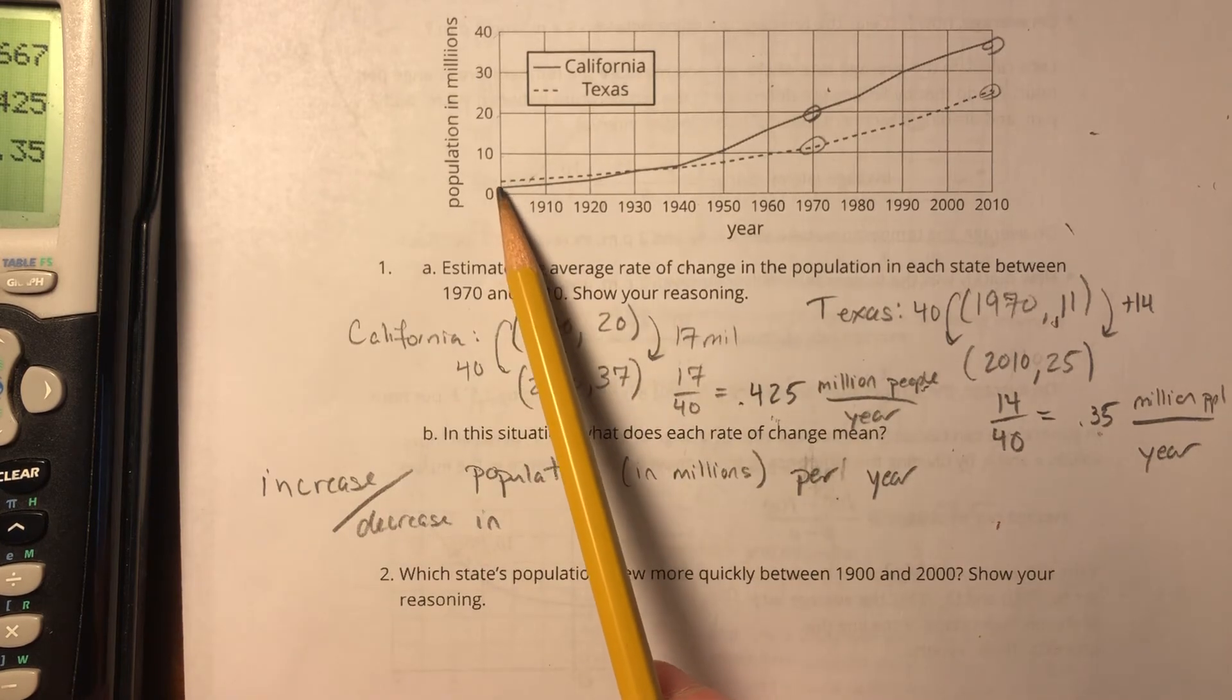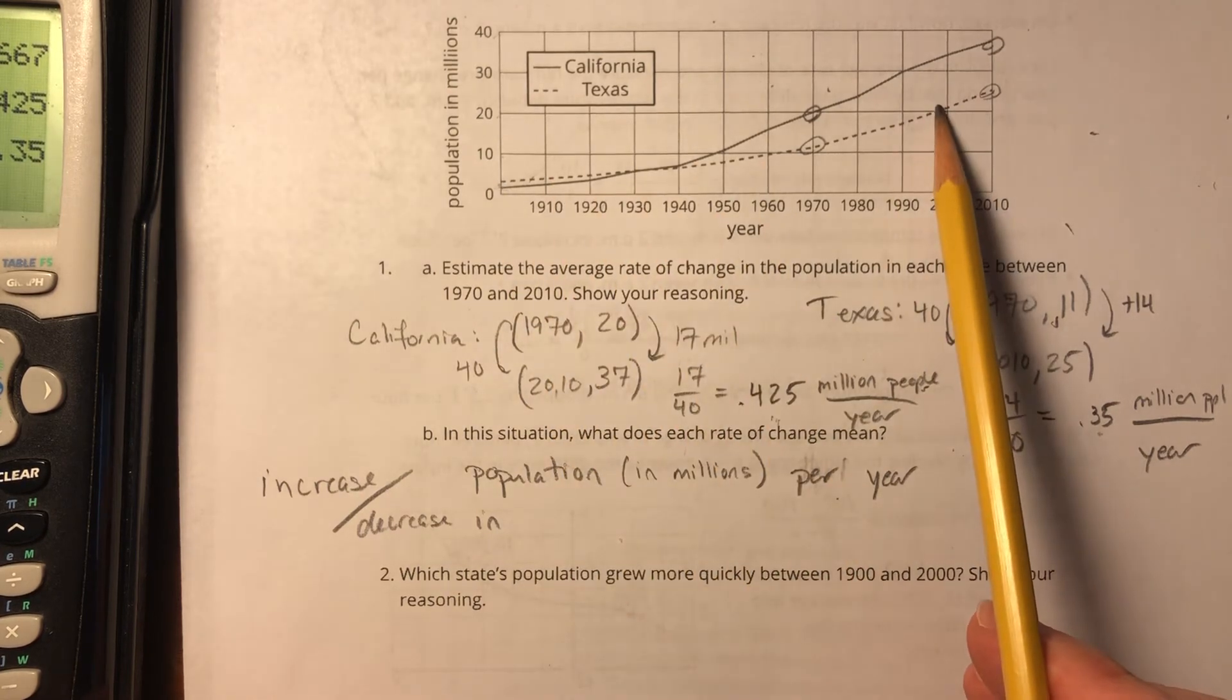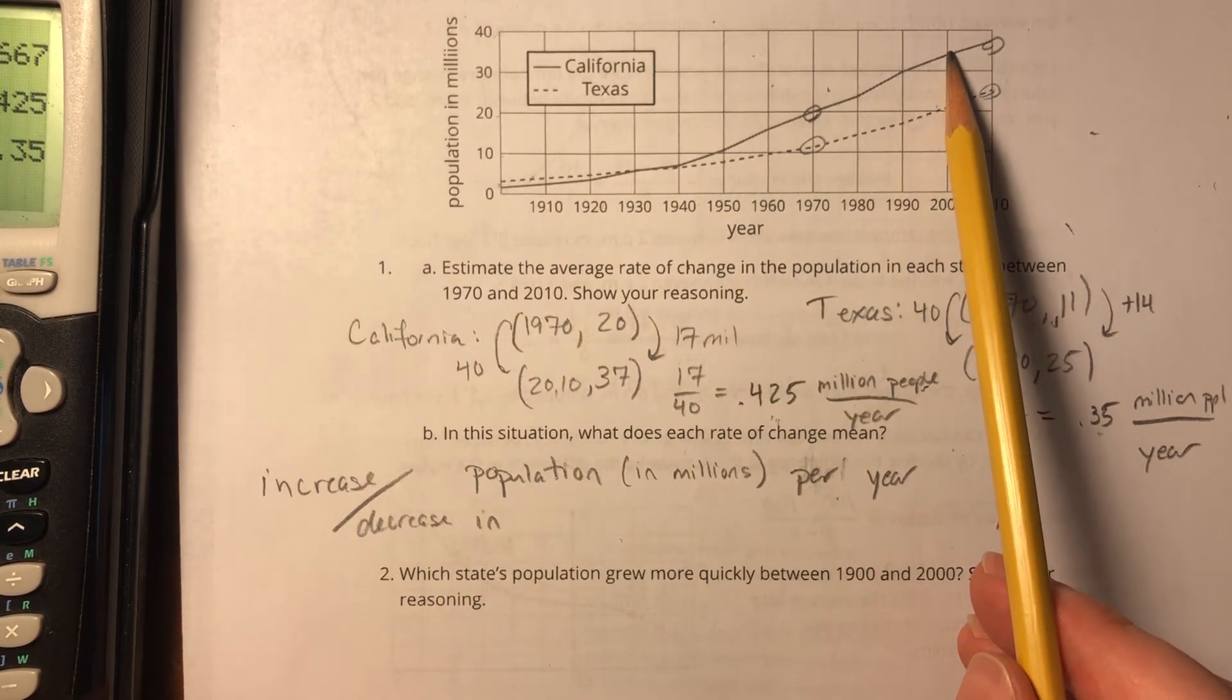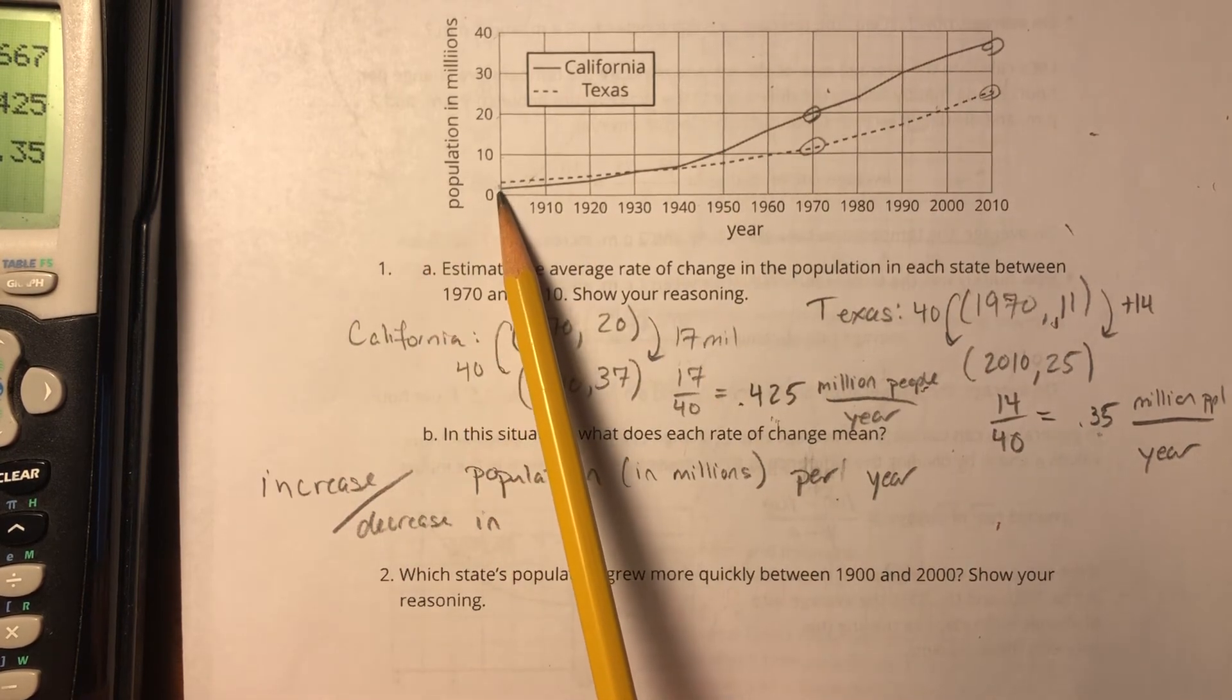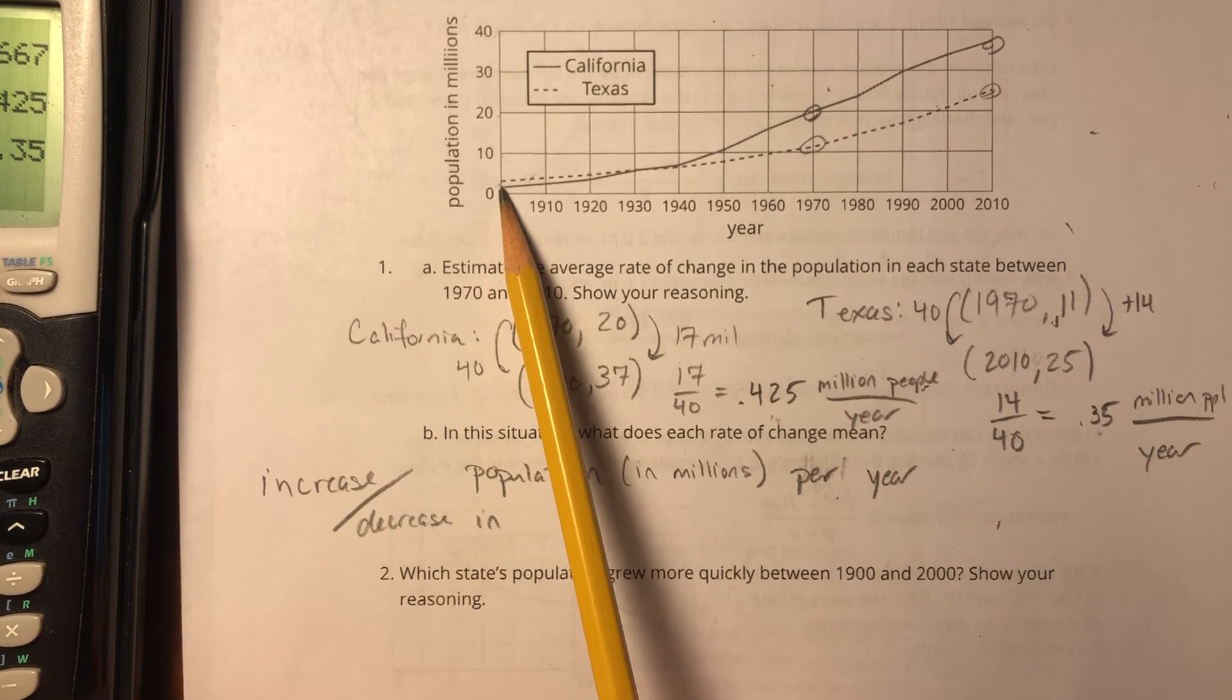Because if I'm looking at where they began, they both began around the same point. And if I'm looking at 2000, California is just way above Texas. And in fact, California actually started with a population a little below Texas.